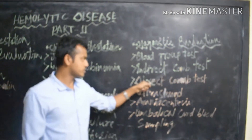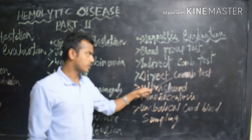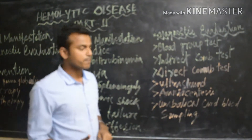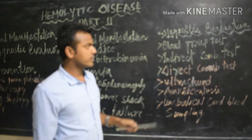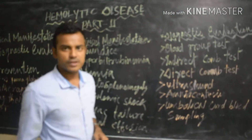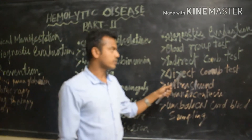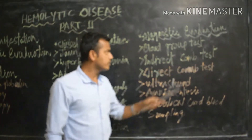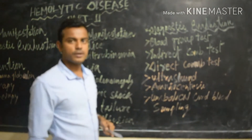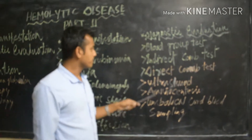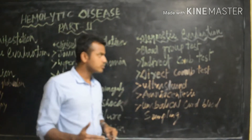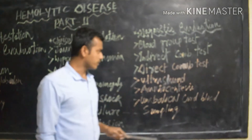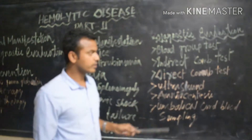The indirect Coombs test and direct Coombs test are done to detect whether antibodies are attacking the fetal erythrocytes or not. The indirect Coombs test is done before delivery, and the direct Coombs test is done after delivery.